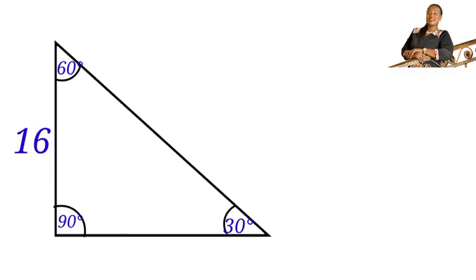Looking at these angles, 30 degrees, 60 degrees, and 90 degrees, this triangle is a special triangle. And this special triangle has some special lengths.